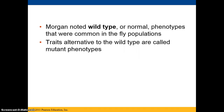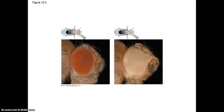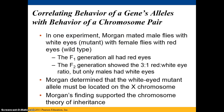Morgan noted there were wild-type phenotypes, which were considered normal and very common in fly populations. Alternative to the wild types, he called mutant. The red-eyed fruit fly is the wild type, and the white-eyed fruit fly is the mutant.